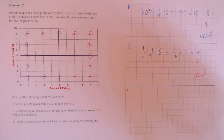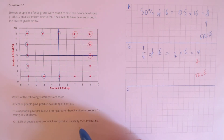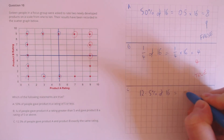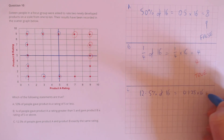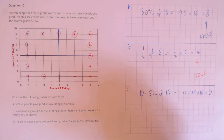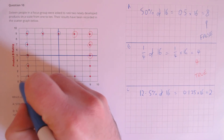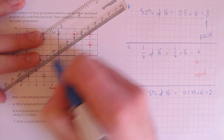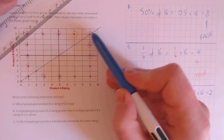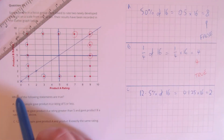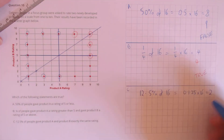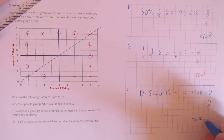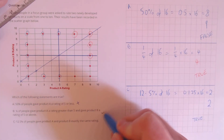Finally, statement C: 12.5% of people gave product A and product B exactly the same rating. 12.5% of 16 is 0.125 × 16 = 2. Plotting the line through (0,0), (1,1), (2,2) and so on, we find 2 points on that line — one at rating 1 and 1, and one at rating 9 and 9. So we have 2 as expected, and that statement is true. Final answers: false, true, and true.